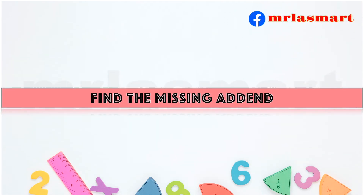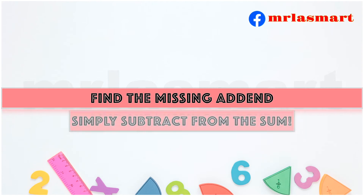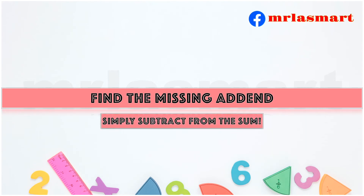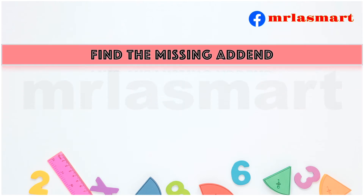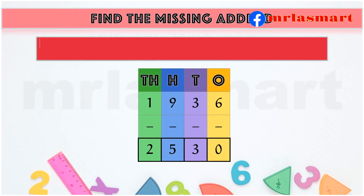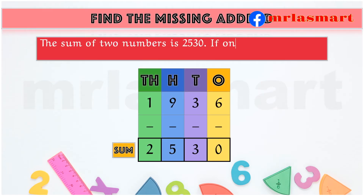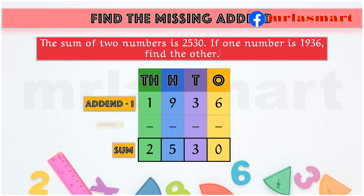Find the missing addend. Simply subtract from the sum. The sum of two numbers is 2530. If one number is 1936, find the other.